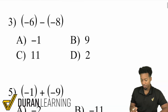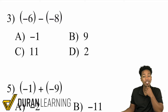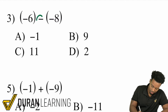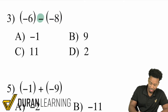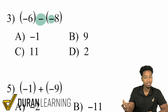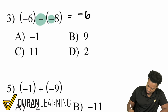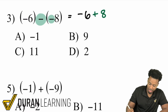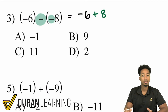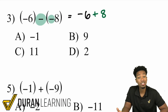Number three: negative 6 minus negative 8. Here's a rule a lot of people get hung up on. We're subtracting a negative. When you have a double negative — subtracting a negative — what you're doing is actually adding. A double negative is a positive. So what we have here is negative 6 plus 8. Whenever you have a positive number and a negative number being added, what you're doing is taking the difference.